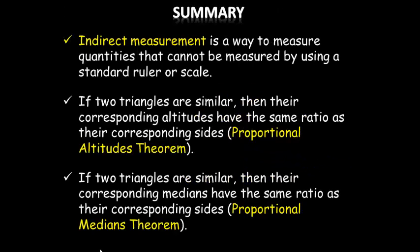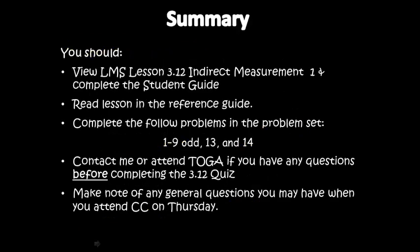Here's our summary. We learned about indirect measurement, the proportional altitudes theorem, and the proportional medians theorem. You need to go through and read the lesson, and read through the reference guide as well. Work on these problems in the problem set. Make sure you understand these. If you get them wrong, check the solutions, because you want to make sure you understand why, so you won't make the same mistake on a quiz or test. If you don't understand the concept, contact me and attend TOGA if you have any questions before you complete the quiz. That's going to be it on our lesson of indirect measurement. Thanks for listening.